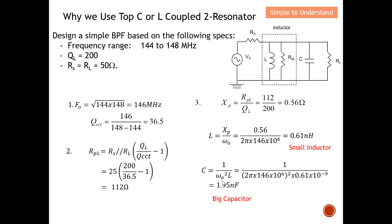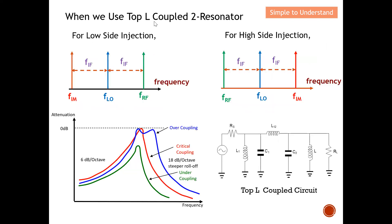I also shared this in the Top-C coupled two-resonator discussion. Hopefully you still remember what low-side injection and high-side injection are. Basically, the image is at the lowest frequency under low-side injection, and the image is at the highest frequency under high-side injection. We need to remove the image, so we need a bandpass filter that will totally suppress the image — at the lower frequency for low-side injection and at the highest frequency for high-side injection.